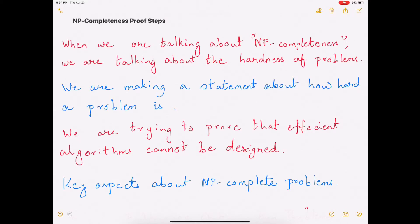So far in the algorithms course, we were talking about how to design efficient algorithms to solve a particular problem that we were interested in. Here, what we are going to talk about is how hard a problem is, and we are going to try to prove that there are no efficient algorithms that can be designed. So it's a completely different approach.